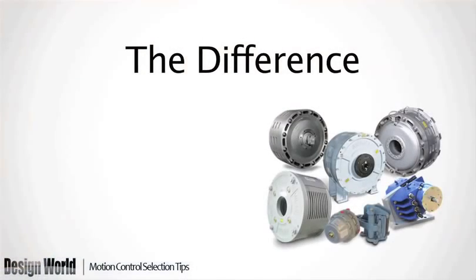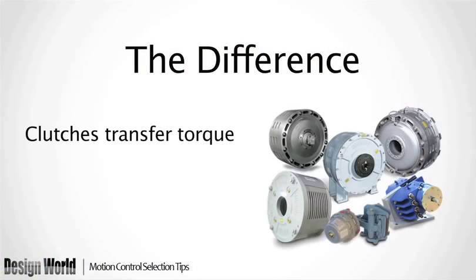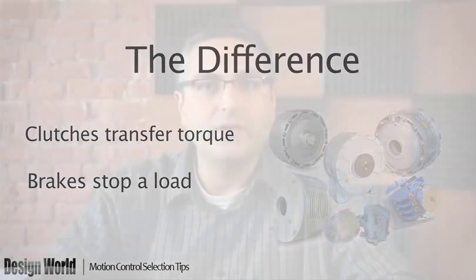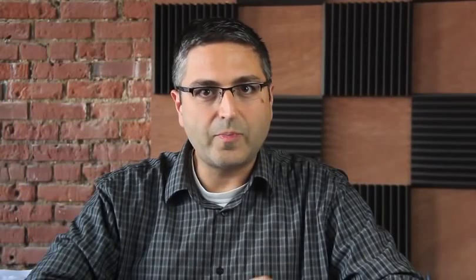The difference between clutches and brakes is that clutches are used to transfer torque, while brakes are used to stop a load, typically a rotating load. At the most basic level, determine if the application calls for a clutch, a brake, or a combination clutch and brake.